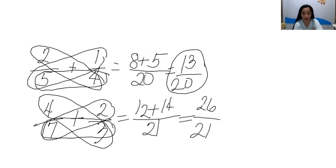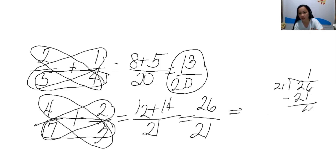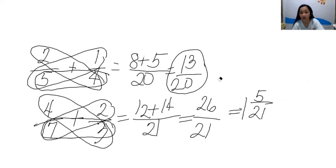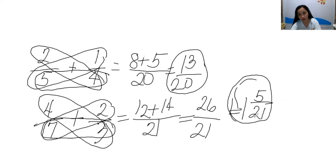So this is an improper fraction because 26 is greater than 21. So what do we do? We'll change the improper fraction to a mixed number. 26 divided by 21 is 1. 21 times 1 is 21. Subtract: remainder is 5. So that 1 becomes the whole number, and the remainder 5 becomes the numerator, and our denominator is 21. Therefore, the answer is 1 and 5 over 21, expressed as a mixed number. We need to express our answer in mixed number and also in lowest terms.